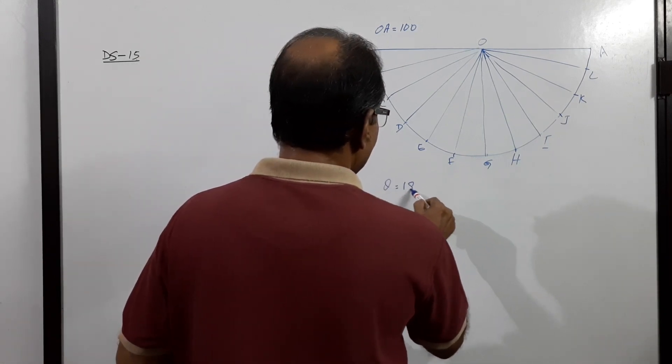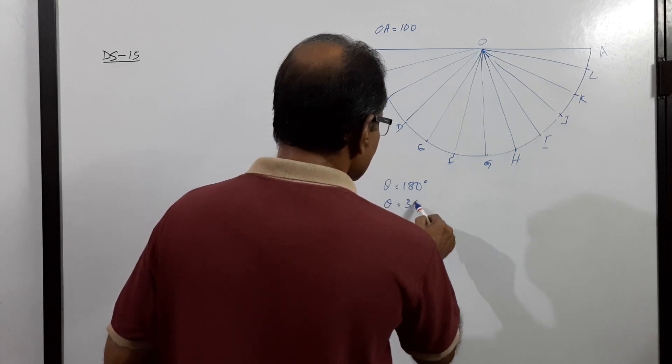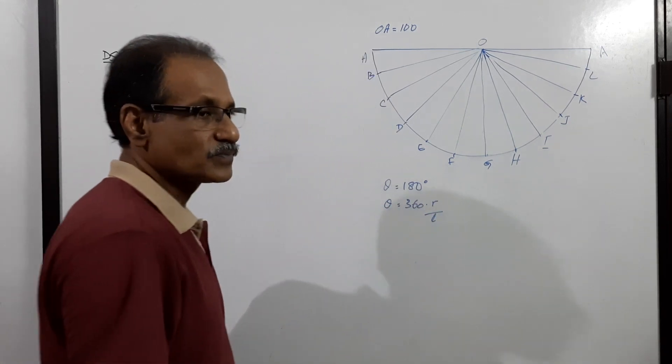Theta equals 180 degrees. How do you find theta? Theta equals 360 times base radius divided by generator true length. The generator full length is OA = 100. So 180 equals 360 times r divided by 100, which gives r equal to 50. This means the cone for which this is the development has got a radius of 50mm, or diameter of 100mm. The full length of the generator L equals OA equals 100mm.